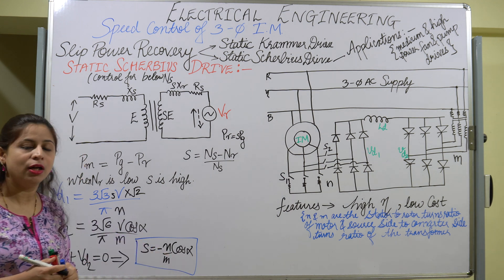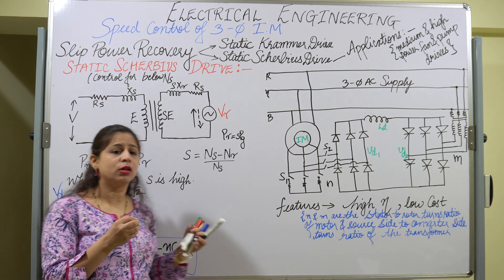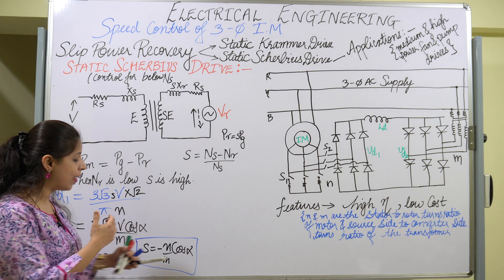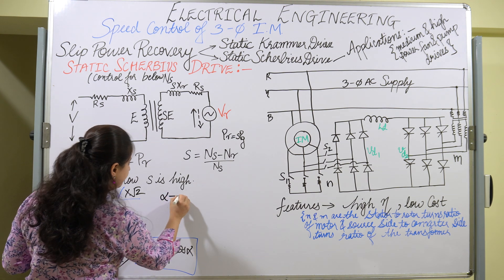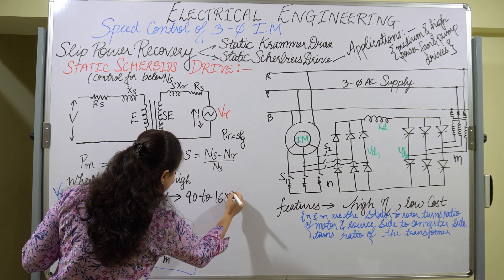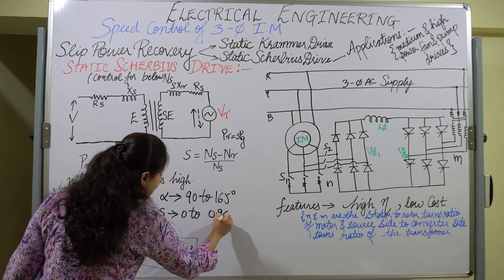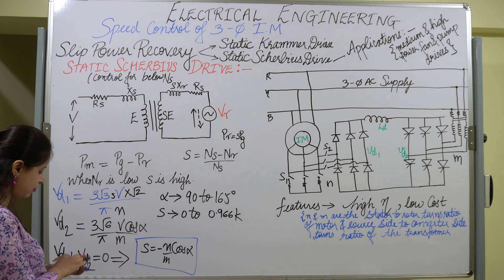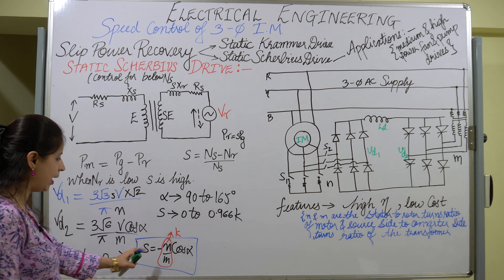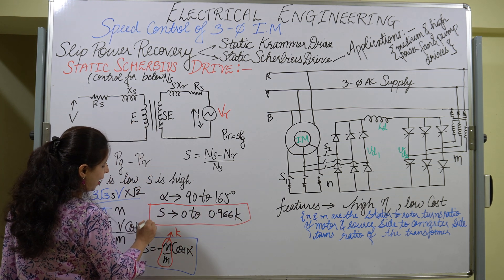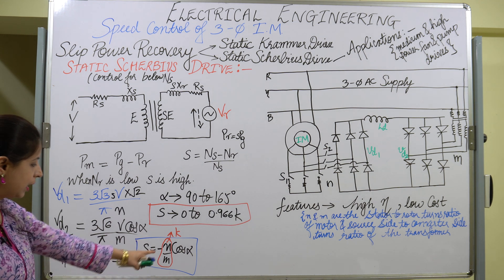The firing angle α is limited to a maximum of 165 degrees. By controlling α in the range 90° to 165°, the slip can be varied from 0 to 0.966k, where k = N/M is the turns ratio. So this drive can vary the slip — and therefore the rotor speed — over this range by adjusting the firing angle.